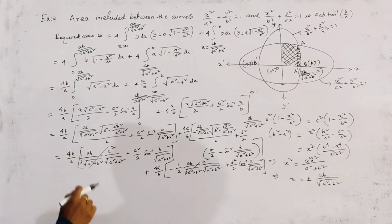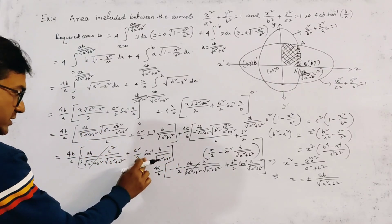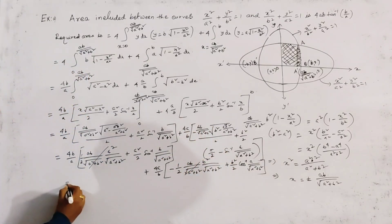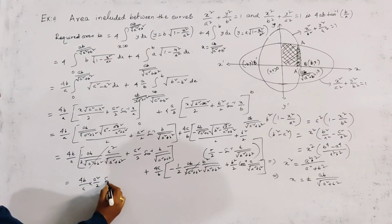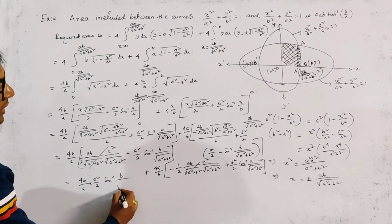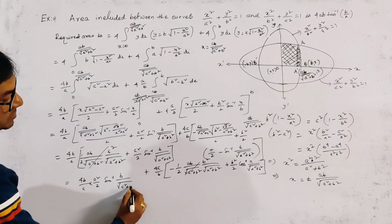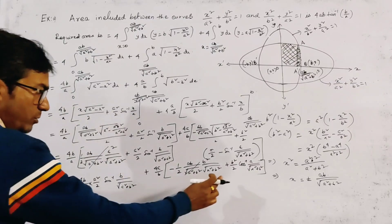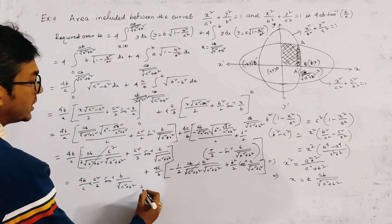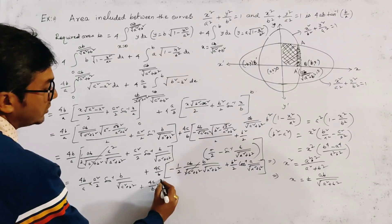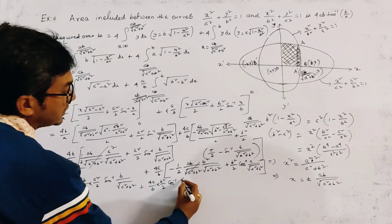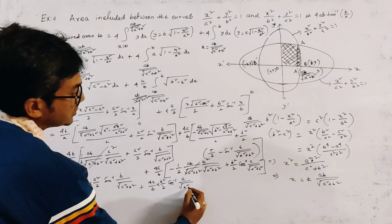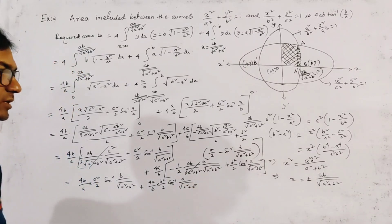After cancellation, there remain two terms: 4b/a · a²/2 · sin⁻¹(b/√(a² + b²)) and 4a/b · b²/2 · cos⁻¹(a/√(a² + b²)). Taking 2ab common from both, the expression becomes 2ab · [sin⁻¹(b/√(a² + b²)) + cos⁻¹(a/√(a² + b²))].